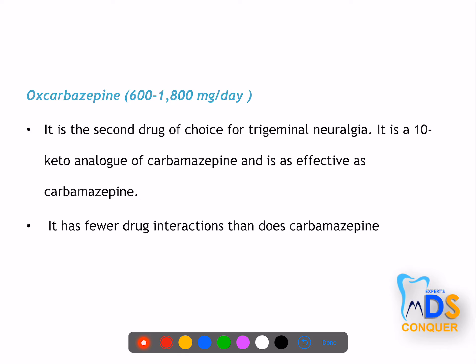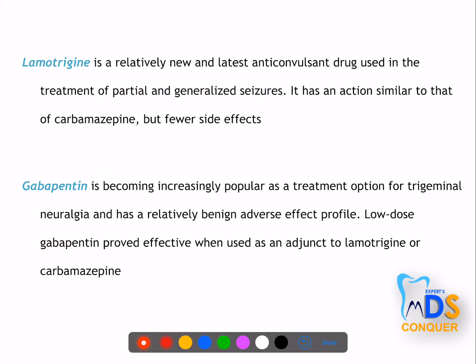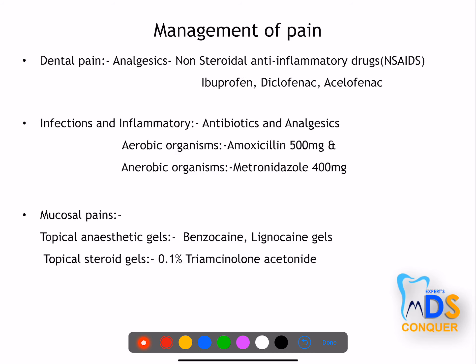Oxcarbazepine, a keto analog of carbamazepine, is the second-choice drug at 600–1800 mg/day. It has fewer drug interactions and side effects than carbamazepine, so many doctors now prefer it. Other options include lamotrigine (a relatively newer anti-seizure drug) and gabapentin (an anticonvulsant), which can be used as an adjunct or in combination with lamotrigine or carbamazepine for an additive effect.